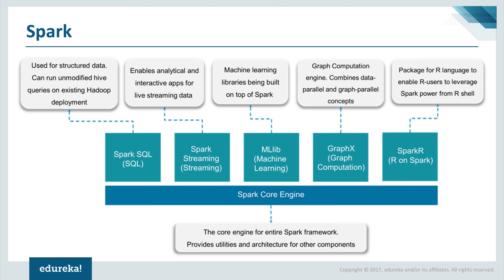The different components in Spark start with Spark Core, which is the base engine for large-scale parallel and distributed data processing. Additional libraries built on top of the core allow diverse workloads for streaming, SQL, and machine learning. Spark Core is also responsible for memory management, fault recovery, scheduling, distributing and monitoring jobs in a cluster, and interacting with storage systems.